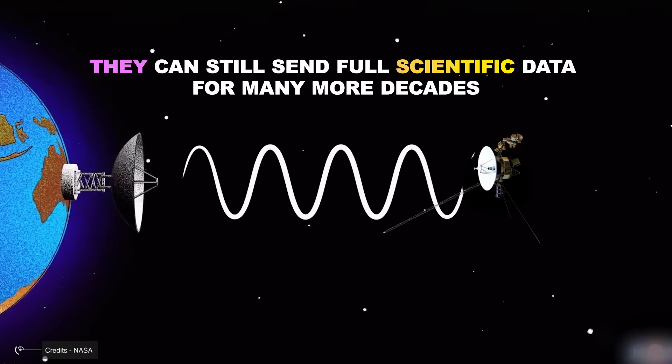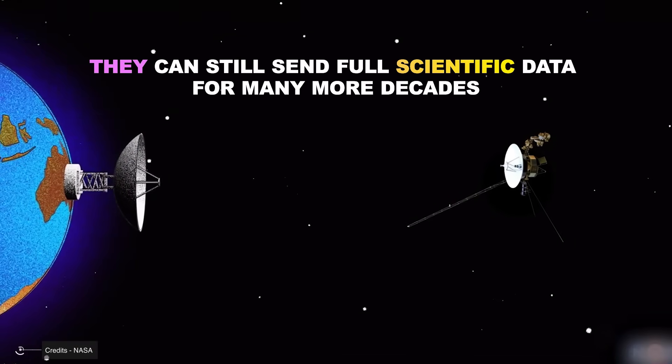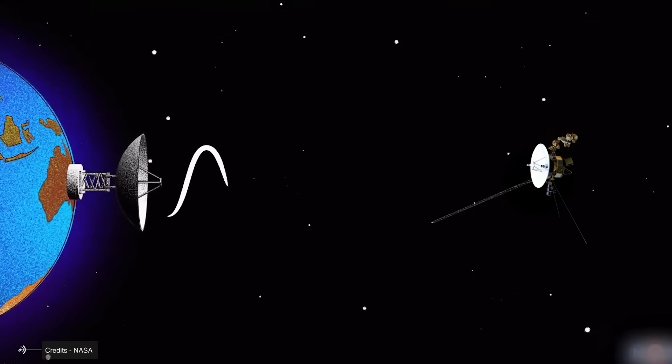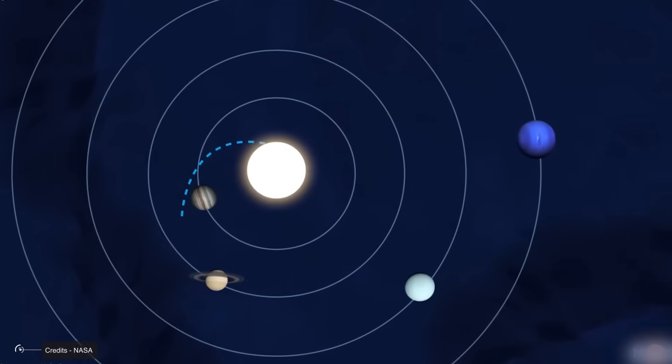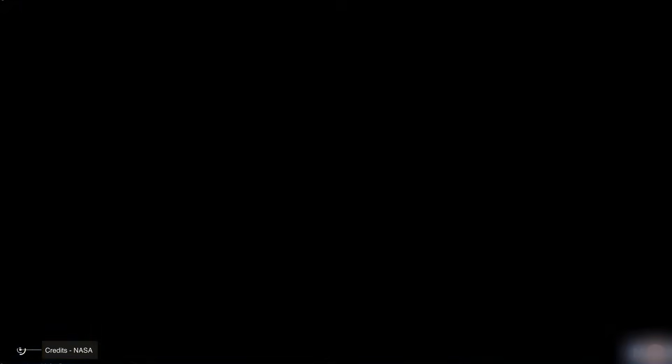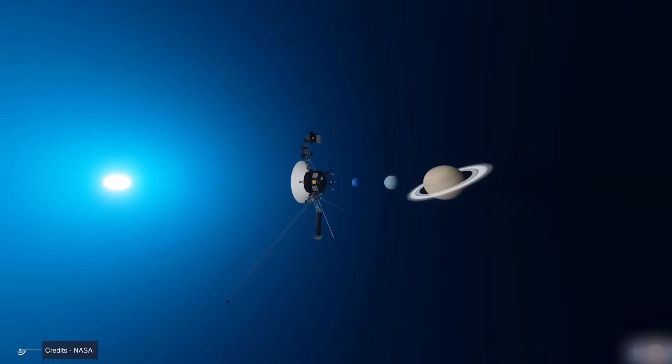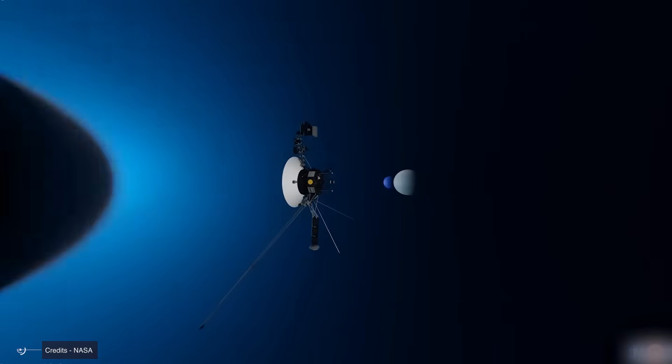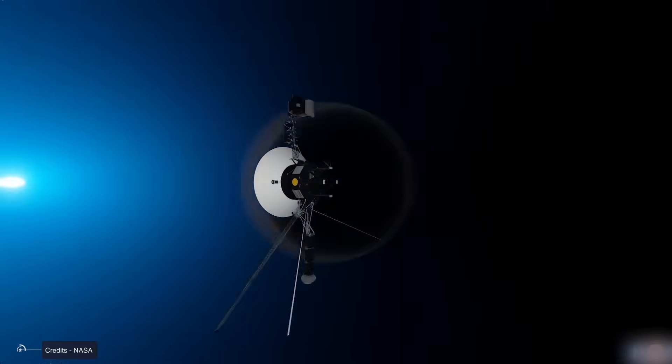They can still send full scientific data for many more decades. The idea that the Voyagers will continue sending data for decades sounds epic, but it's not realistic. Both probes are nearing the end of their operational life, and NASA has confirmed that only a few years of viable scientific operations remain.